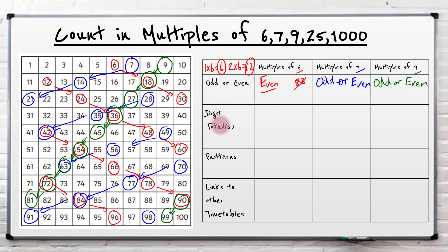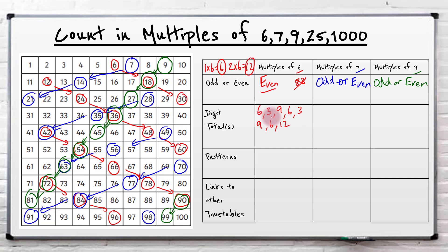Now digit totals. What this means is we're going to add together the digits in the multiples and see what they get. So the first multiple of 6 is just 6, so digits make 6. Then 1 plus 2 gives me 3. Then 18: 1 plus 8 is 9. Then 24: 2 plus 4 is 6. Then 30: 3 plus 0. And 36: 3 plus 6 is 9. And 42: 4 plus 2, again 6. Basically all the answers for multiples of 6, if you add together their digit total, they give you a multiple of 3 - because 3, 6, 9, 12 - they're all multiples of 3.